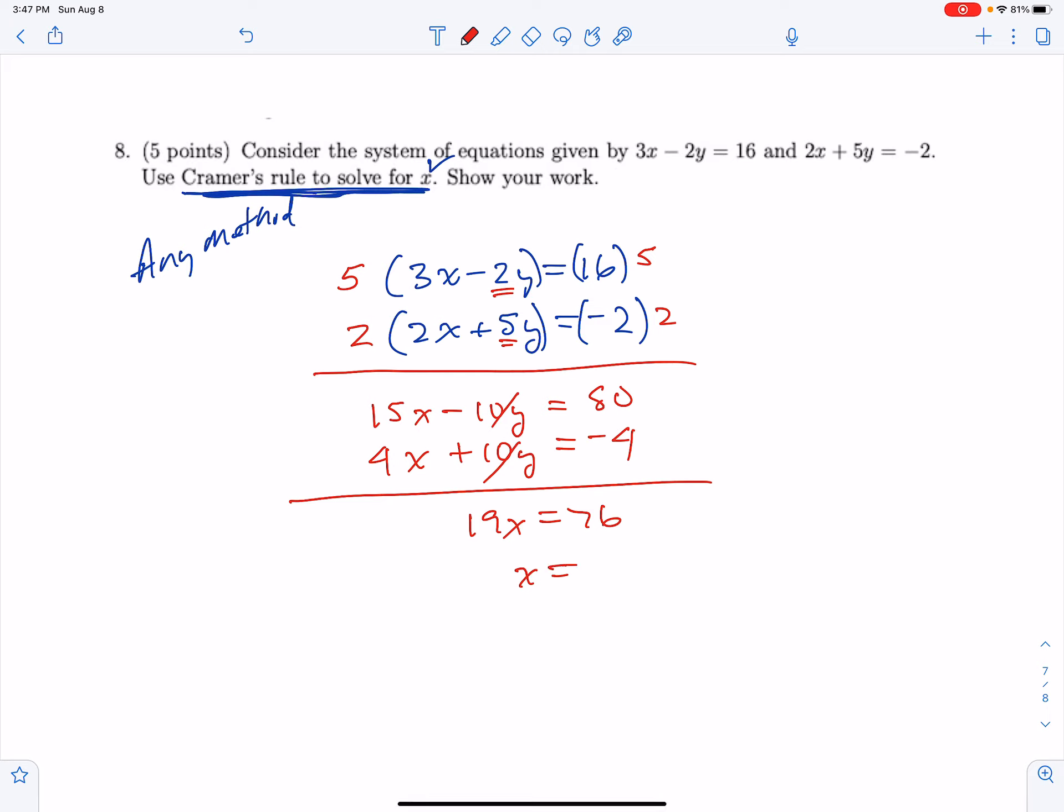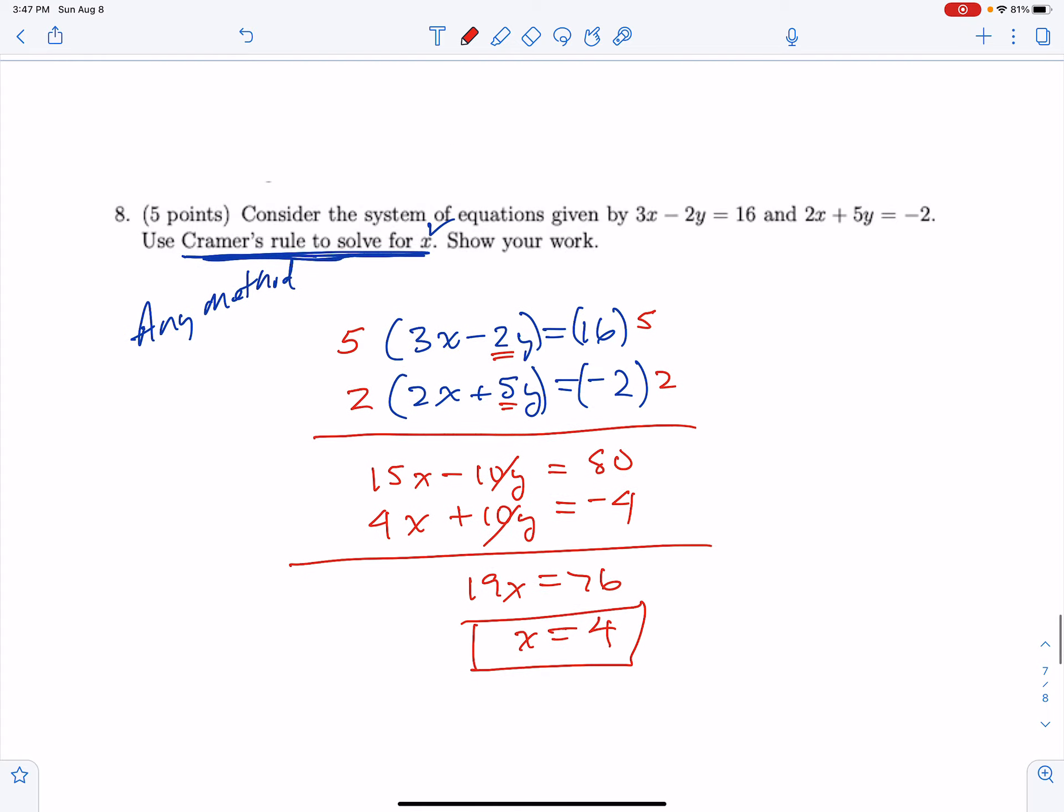76 divided by 19 is 4. What I'm saying is I expect you to be able to solve a system of equations where there's two unknowns. Another thing you can do is use one equation, solve it for y, then back substitute that in to eventually get to x. There are several methods you can use. Here are the solutions for problems seven and eight from the old final.